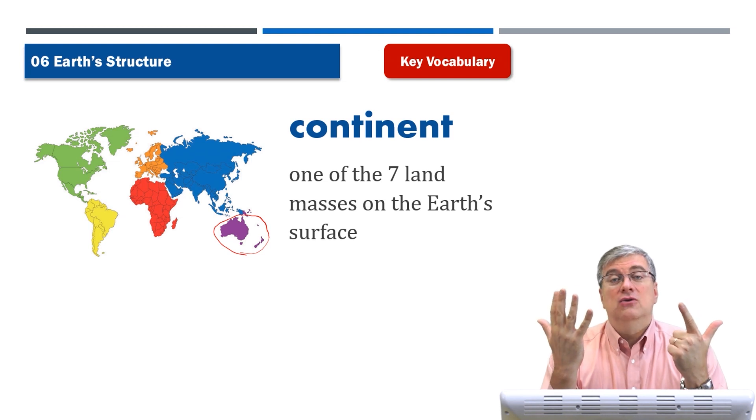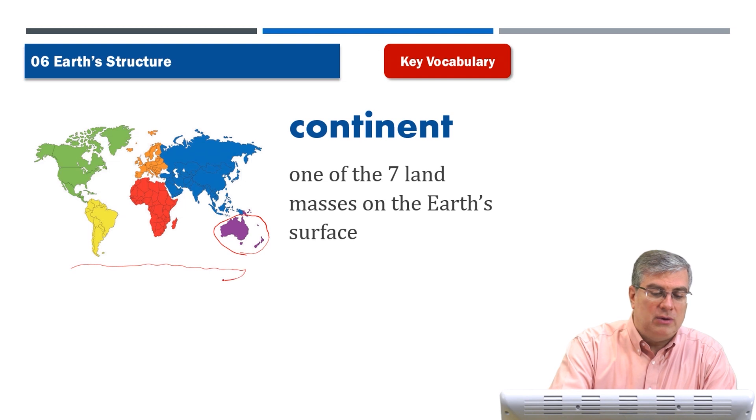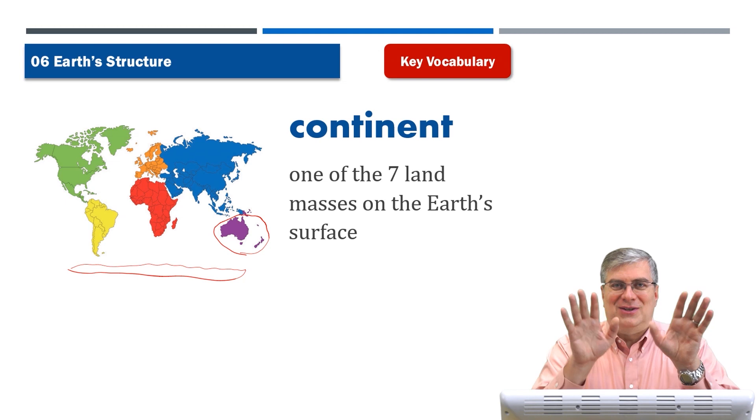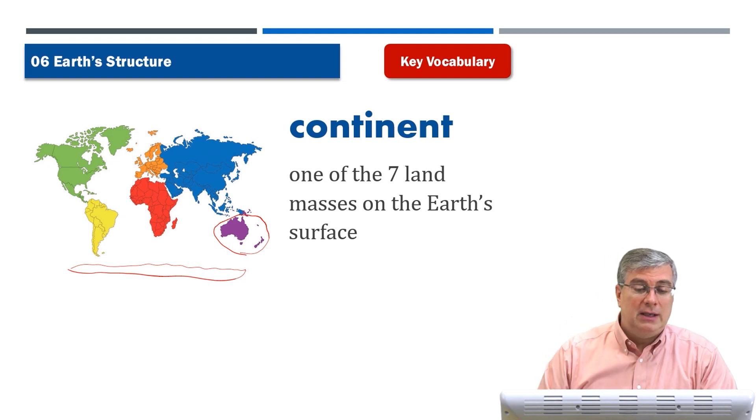That is another huge landmass that is all along the bottom of your map, if you look at your world map. It's not that big, of course. It's just the shape of the map. Okay, but it is a big landmass on the South Pole, and those are seven continents. Continents, of course, are landmasses. That's where people live. People and animals and plants live there.